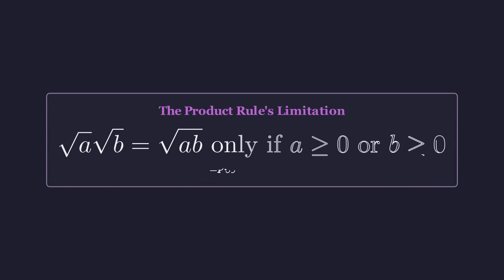The product rule for square roots has a critical condition. It is only valid if at least one of the numbers a or b is non-negative. It fails when both are negative, which is exactly the case in our problem.